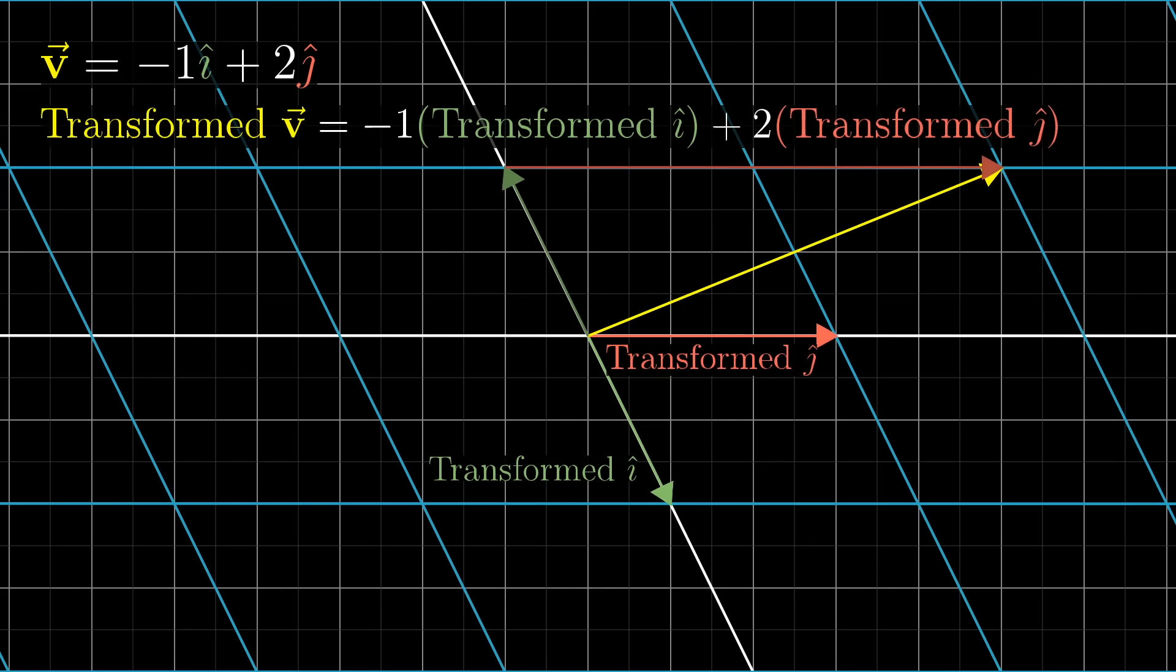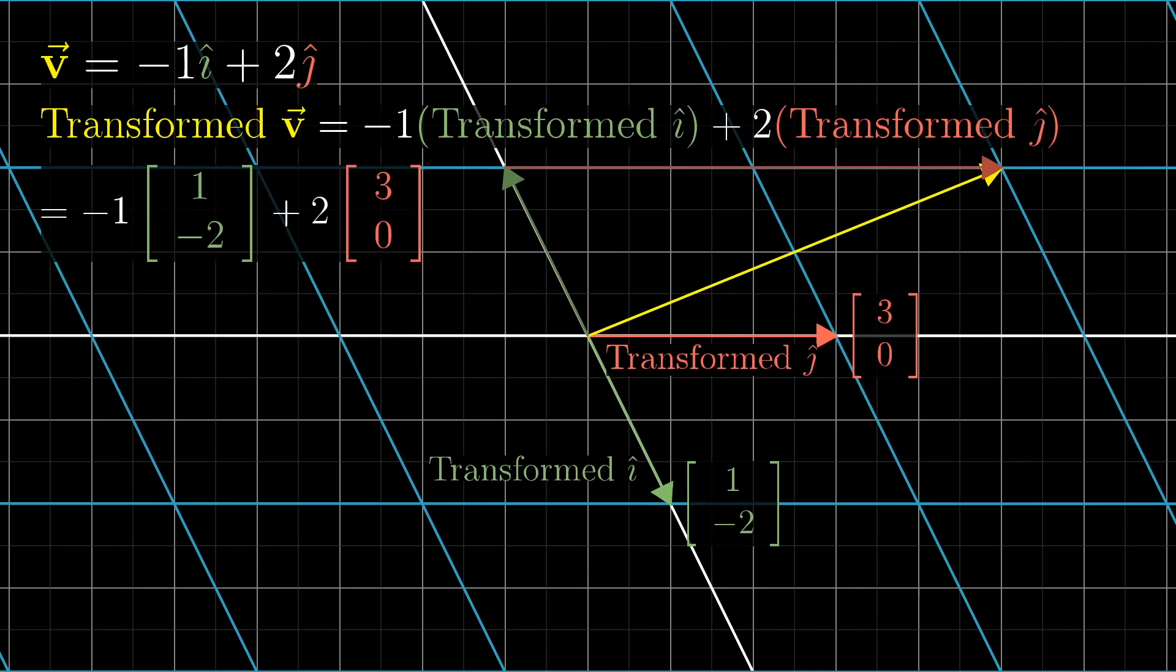This means you can deduce where v must go based only on where i-hat and j-hat each land. This is why I like keeping a copy of the original grid in the background. For the transformation shown here, we can read off that i-hat lands on the coordinates (1, -2), and j-hat lands on the x-axis over at the coordinates (3, 0). This means that the vector represented by (-1, 2) ends up at -1 times the vector (1, -2) plus 2 times the vector (3, 0). Adding that all together, you can deduce that it has to land on the vector (5, 2). This is a good point to pause and ponder, because it's pretty important.